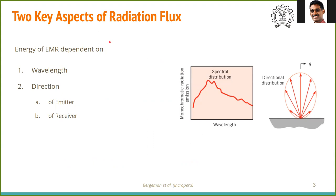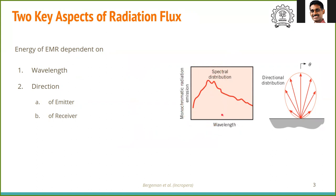There are two key aspects of radiation that we have to remember throughout this lecture series. One is the wavelength, and the other is direction. The energy of electromagnetic radiation is dependent on the wavelength as well as the direction of the emitter and receiver. The wavelength dependence is called the spectral distribution — whenever we see the word 'spectral,' it is associated with wavelength dependence. For example, the intensity of radiation depends on wavelength, which is called the spectral distribution of intensity.